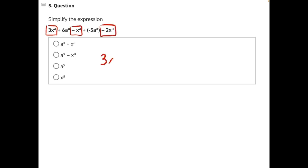So we'll need 3x to the a minus x to the a minus 2x to the a. And then we will need all of our a to the x's. So we'll need plus 6a to the x and then minus 5a to the x.